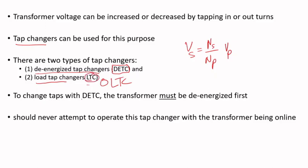To change taps with the de-energized tap changer, the transformer must be de-energized first, and that has to be done manually — there's a handle you have to turn to make the change. You might have a 5% voltage change range, in steps of 2.5%, meaning each tap change is worth 2.5% of the rated voltage. You can have two taps above and two below nominal.